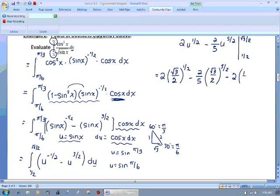two times. Now I put in my one half for my u in both of those situations. Almost ran out of room there. Hopefully, you can read that okay. I've got negative two fifths times one half raised to the five halves up there.